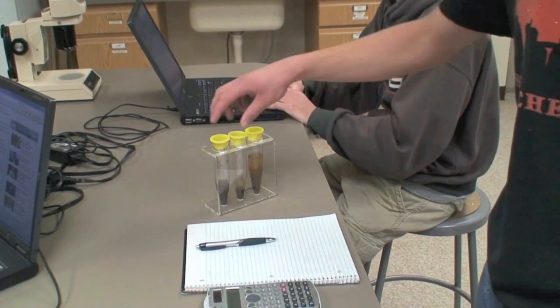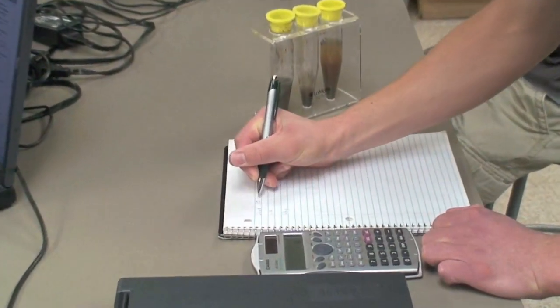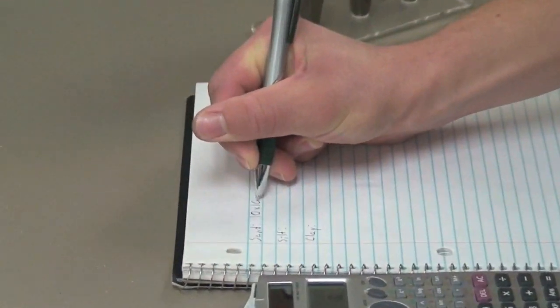To calculate the sand percentage of the soil, look at the sand level in the first tube. Multiply the reading by 100 and divide by 15.